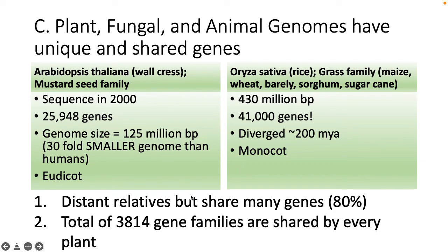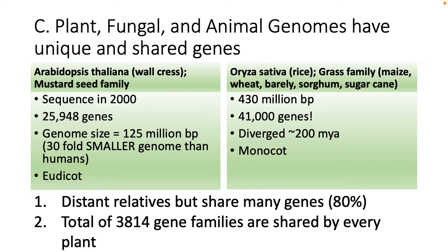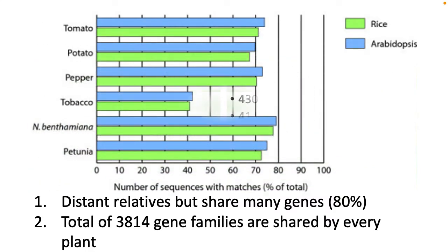Here is a side-by-side comparison of some plants: Arabidopsis thaliana, which is wallcress from the mustard seed family, compared to rice from the grass family. Take a look at the gene numbers and when they diverged — Arabidopsis is a dicot and rice is a monocot. Distant relatives may share many genes, maybe 80% in this case. Some gene families are shared by every single plant, and maybe those gene families are what makes plants plants. This graph shows how rice compared to the Arabidopsis genome matches up with other plants.